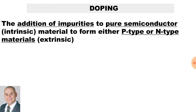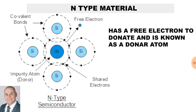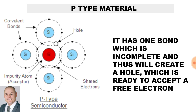Doping occurs when there is an addition of impurities to a pure semiconductor material to form either a p-type or n-type material. An n-type material has a free electron to donate and is known as a donor atom. A p-type material has one bond which is incomplete and thus will create a hole, which is ready to accept a free electron.